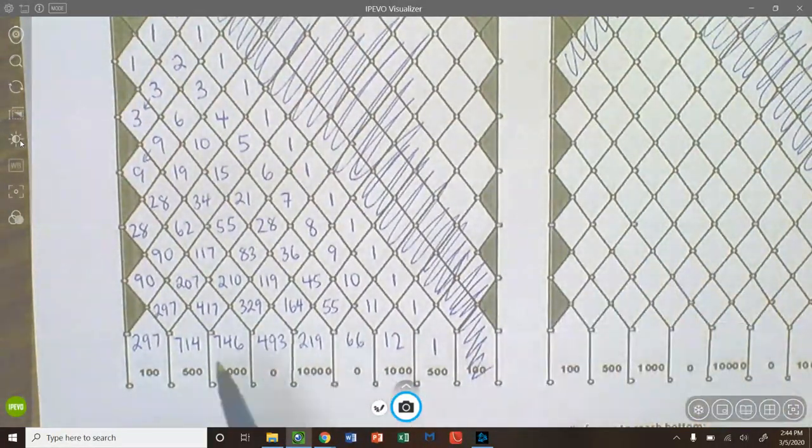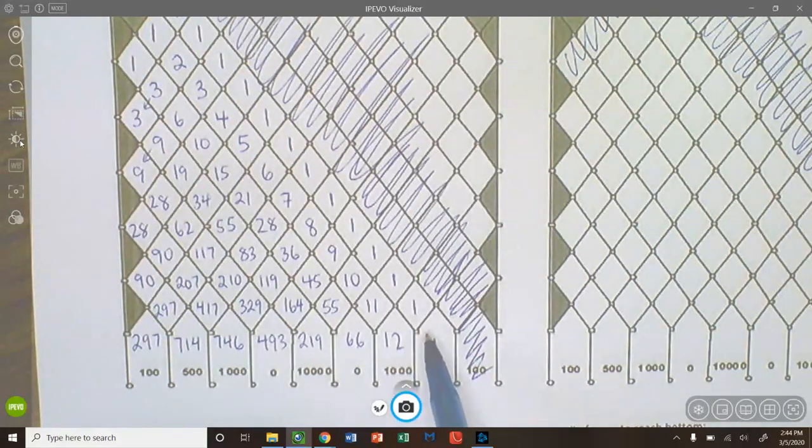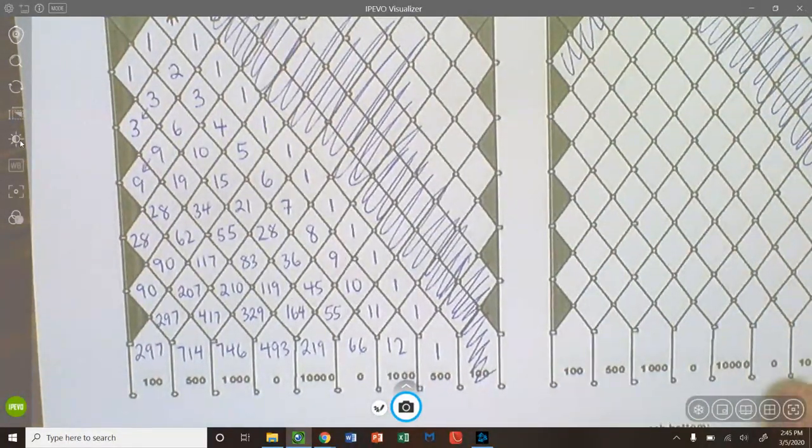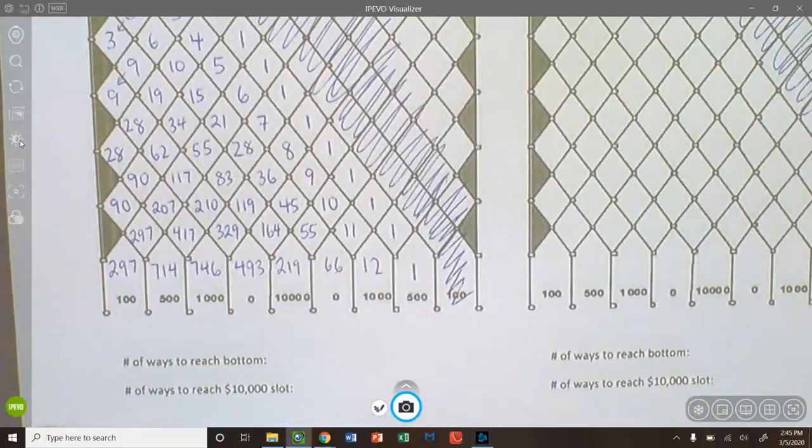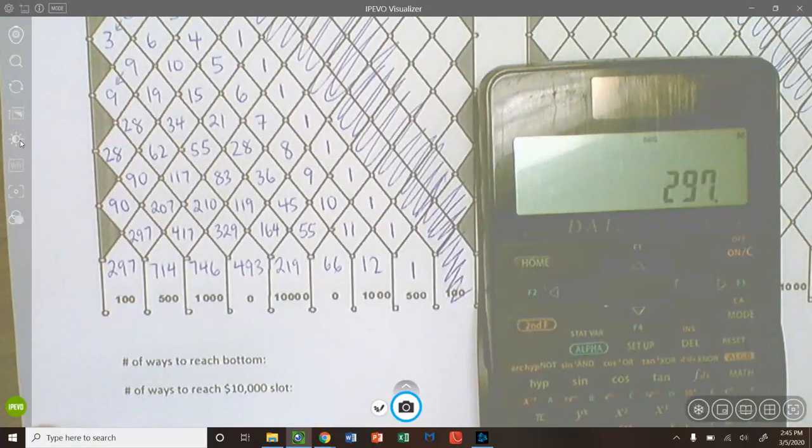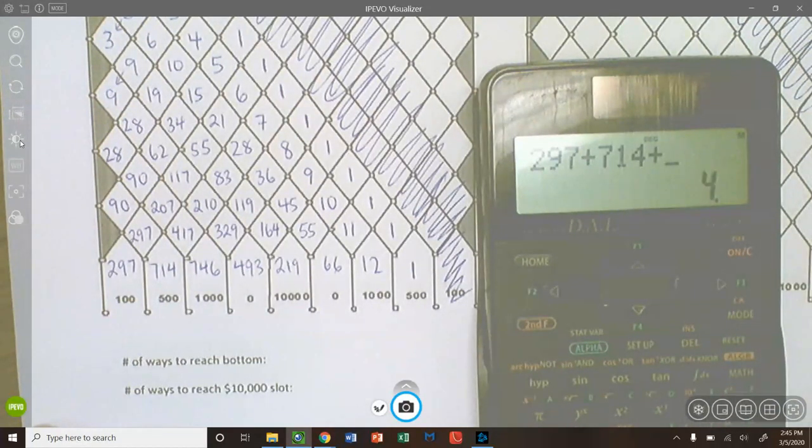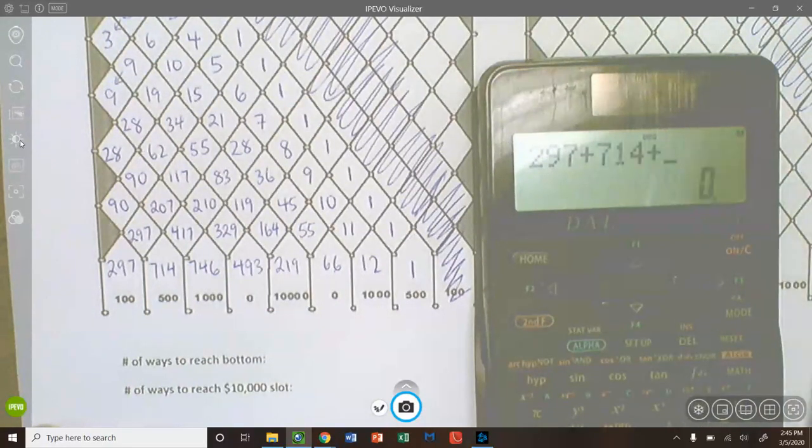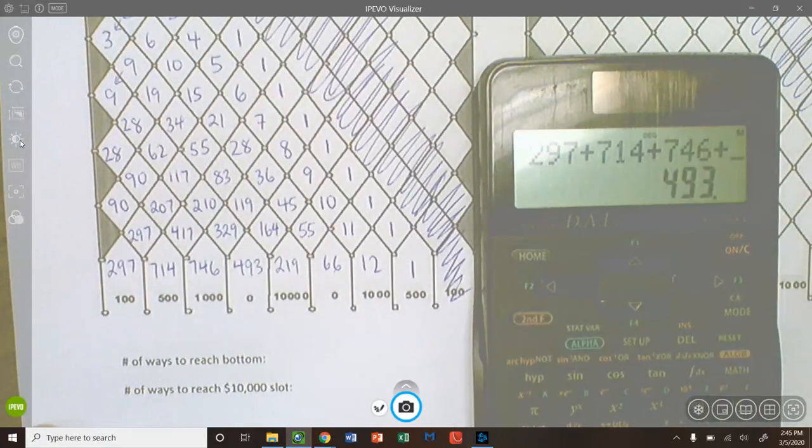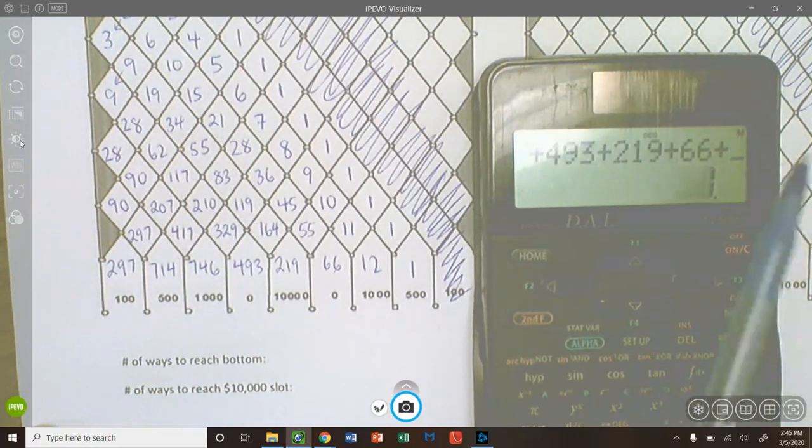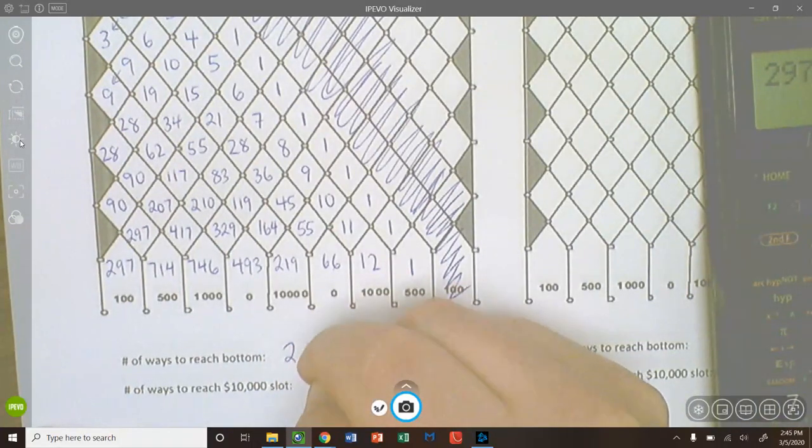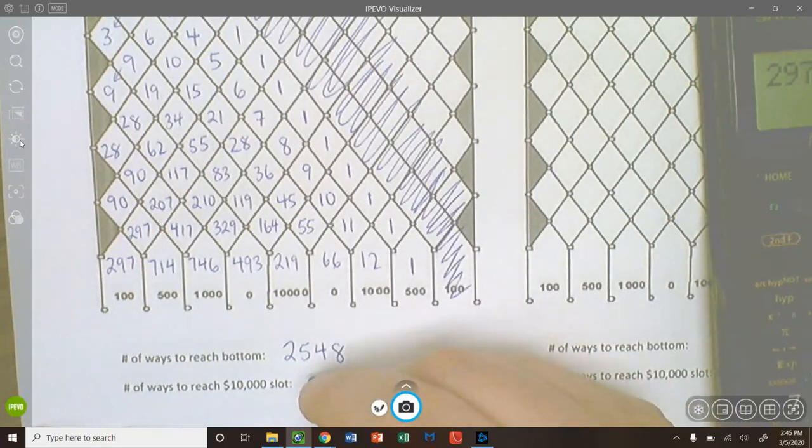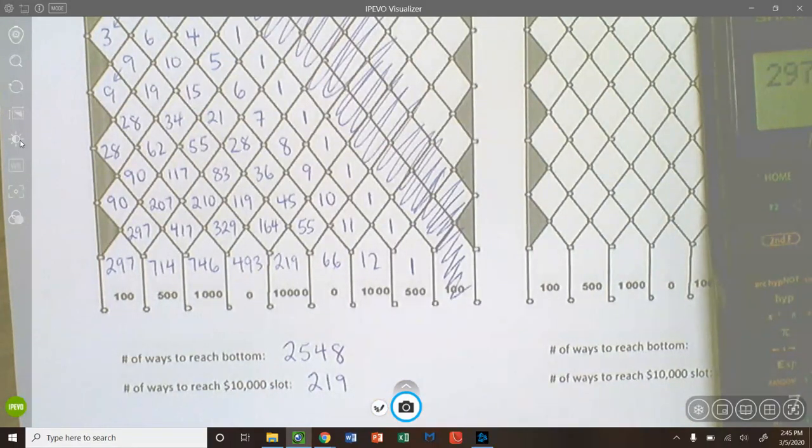297, 417. Oh boy. I think I'm going to whip out the calculator, getting a little dicey for me with these big numbers. 329, 164, 55, 11. And then we have one more decision for each of these Plinko chips to make before they land in their bins. So we can see there's 297 ways to get to that $100 bin plus 417, 714 ways to get to this bin. And we'll just finish off our Pascal's method, working our way across. 493, 219, 66, 12. And then one, as we did earlier.